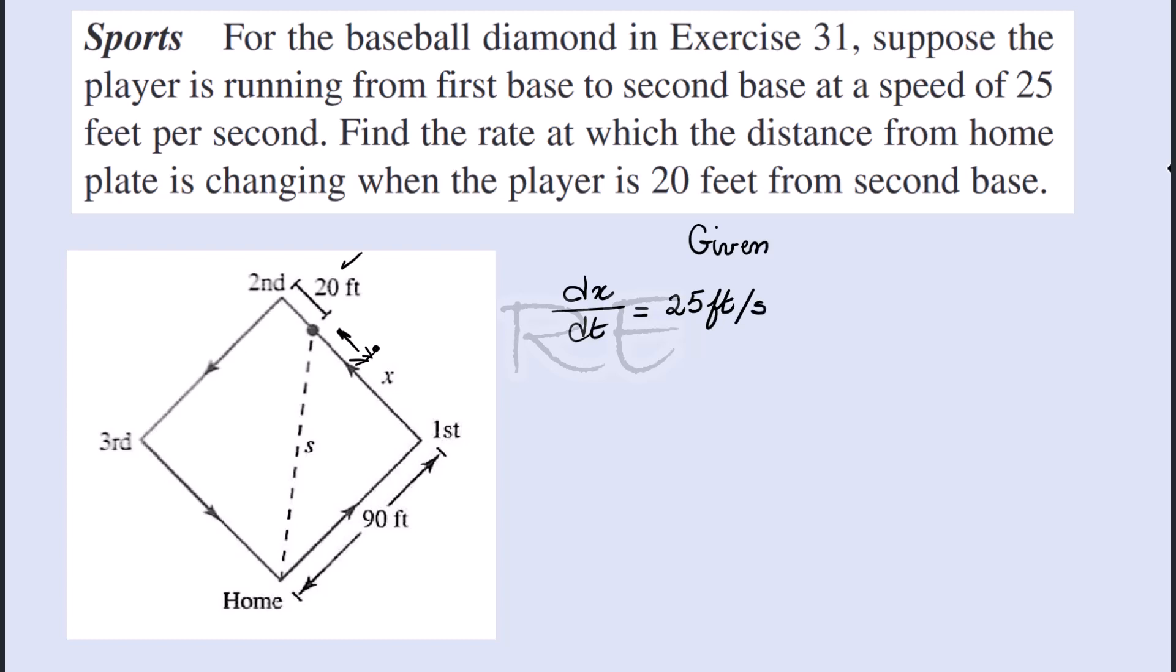Now the player is 20 feet from the second base. We know that all the sides are congruent, equal in measure; therefore, each side of the rhombus measures 90 feet.